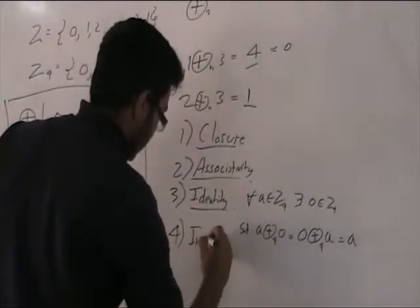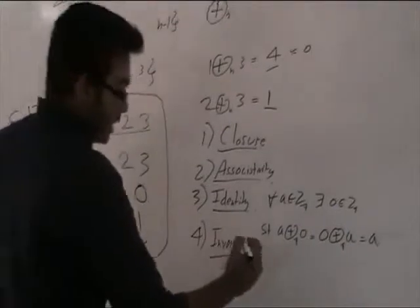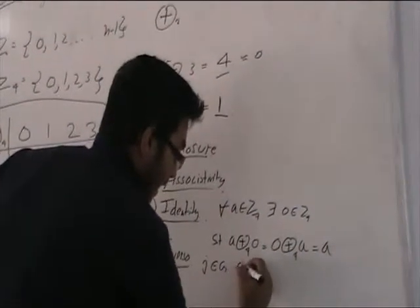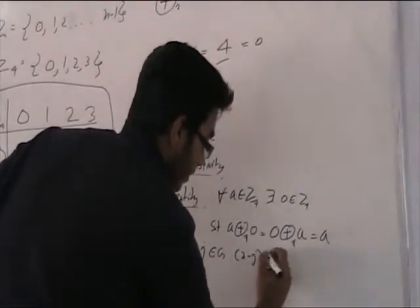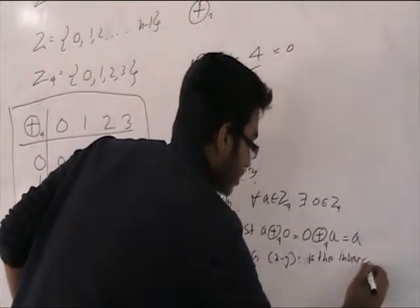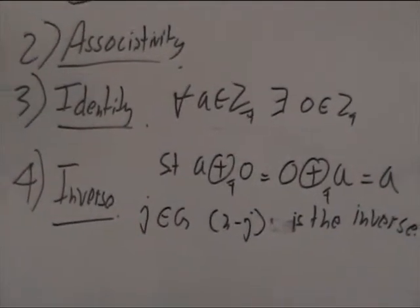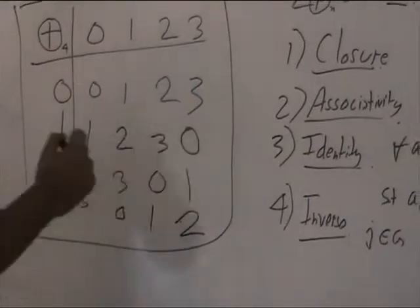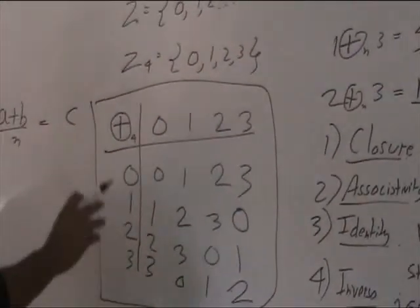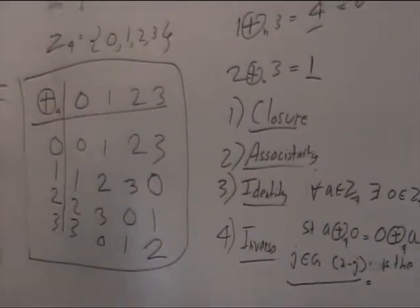Inverse — this can also be verified. For this group, if my element is j belonging to G, then n minus j would be the inverse. There is no set proof for this, but it can be checked by verification. So I can see that 1 plus 3 is equal to 0, and n is 4, and 4 minus 1 is 3, so 3 is the inverse of 1. Similarly for all the other elements, this will hold. So this is my group under addition modulo n.